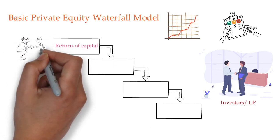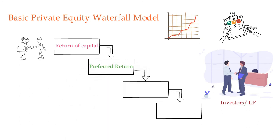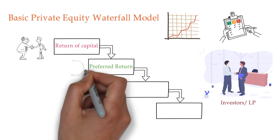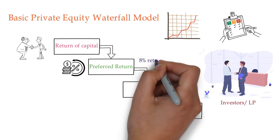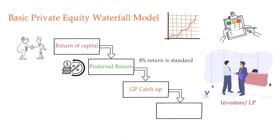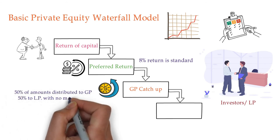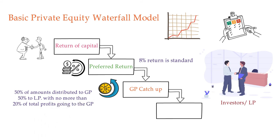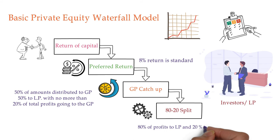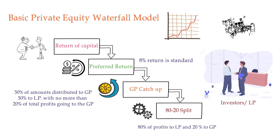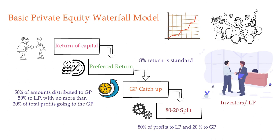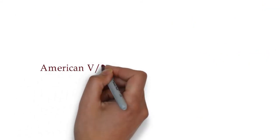The second component is preferred return, which assumes the investor would have earned income had the money been invested elsewhere — typically 8%, and can be compounding. Third is the general partner catch-up: 50% of amounts distributed to the general partner and 50% to limited partners, with no more than 20% of total profits going to the general partner. The fourth component is the 80/20 split: 80% of profits to limited partners and 20% to the general partner. When the waterfall reaches this level, the general partner is receiving 20% of all profits.